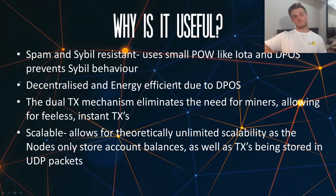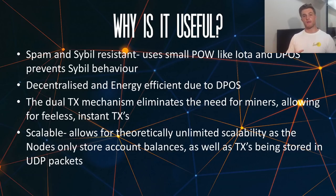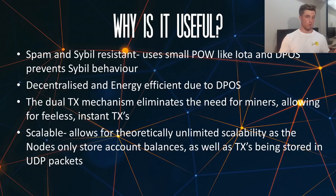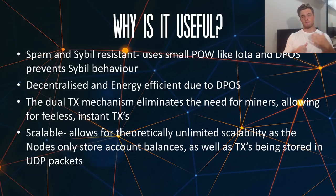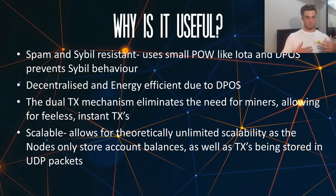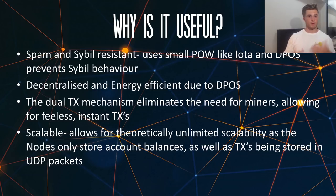The next point is that Ryblox is spam and Sybil resistant. Spam is basically when you send a huge volume of transactions onto a network in an effort to bottleneck and clog it up. Like IOTA, Ryblox uses a small amount of proof-of-work in their algorithm — just a tiny bit. But even though it's a little bit, if you try to spam the network, the cumulative total of resources required becomes economically unviable, and that's what stops the network from being spammed.